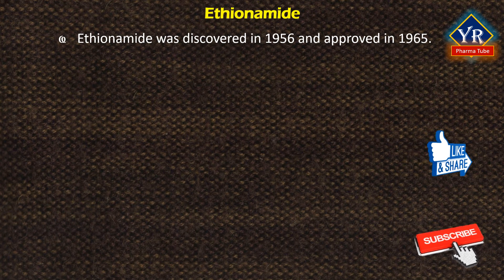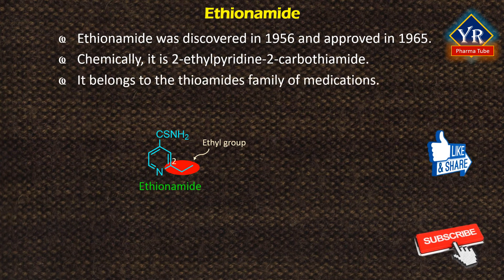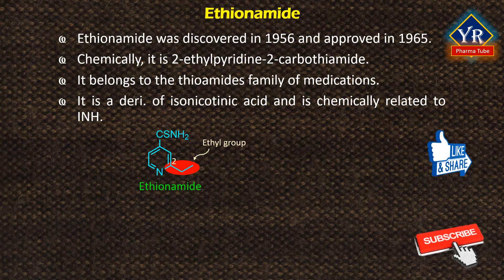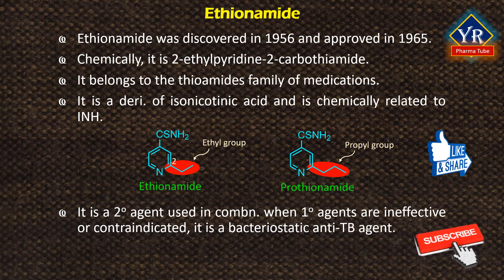The second drug is ethionamide. Ethionamide was discovered in 1956 and approved for medical use in 1965. Chemically, it is known as 2-ethylpyridine-4-carbothioamide and belongs to the thioamide family of medications. Ethionamide is a derivative of isonicotinic acid and is chemically related to isoniazid. In contrast to the isoniazid series, 2-substitution enhances activity in the thioisonicotinamide series and blocks the synthesis of mycolic acids. The synthesis of analogues of isonicotinamide resulted in the discovery of ethionamide and a homologue where the ethyl group is replaced with a propyl group, as in prothionamide. Both compounds have proven to be bactericidal against Mycobacterium tuberculosis and Mycobacterium leprae. It is a secondary agent used in combination when primary agents are ineffective or contraindicated, and is a bacteriostatic anti-TB agent.